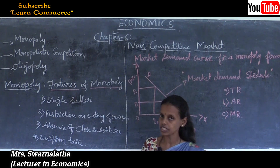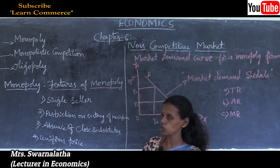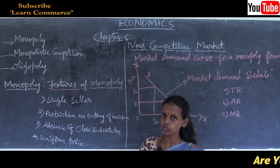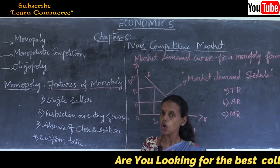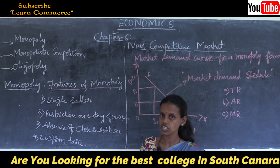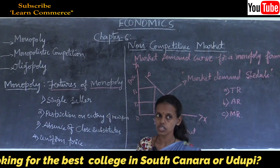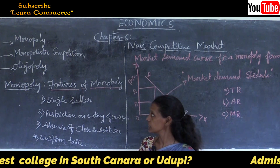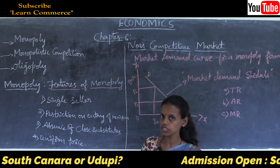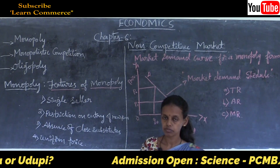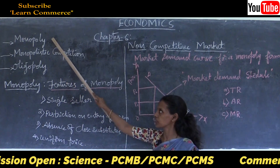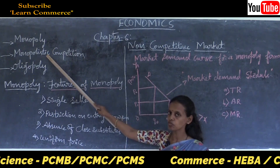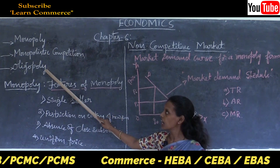In non-competitive markets, we will study the features of monopoly, the features of a monopolistic competitive market, and oligopoly. Recall from perfect competition: large number of buyers and sellers, homogeneous product, free entry and exit, and absence of transport cost. Now under monopoly, we will study what its features are, and under oligopoly, how firms behave.